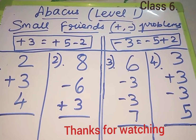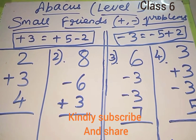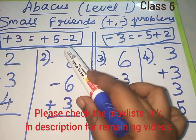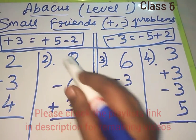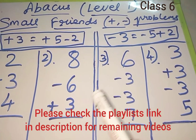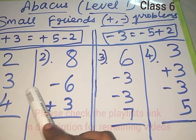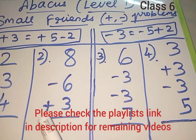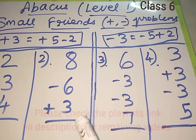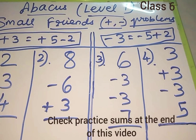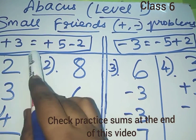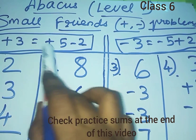Hello friends, we are in Level 1, Class 6 in Abacus. Here we are going to see the problems using the small friend formula for plus 3 and minus 3. When we need to add 3, first we should check whether 3 beads are available to add. If beads are available we can add directly. When enough beads are not available, we take the help of small friend and big friend.